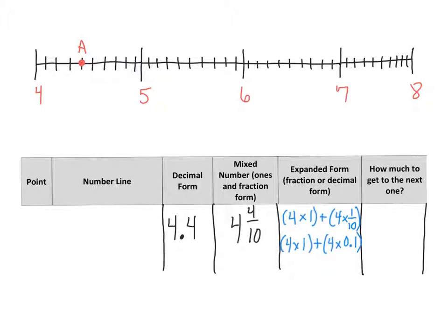How much more do we have to add to get from four and four-tenths to the next whole, which would be five? We count: one, two, three, four, five, six. So we would need to add six-tenths to get to five, our next whole.